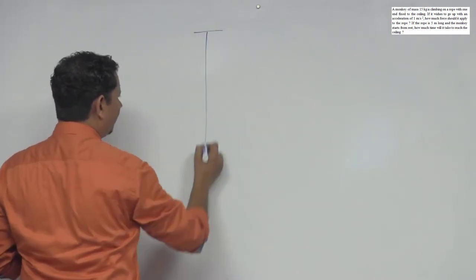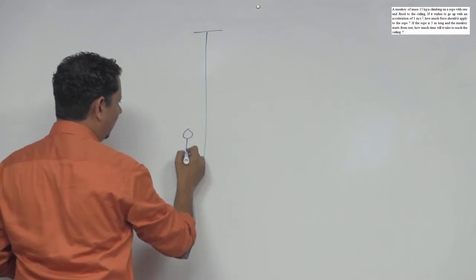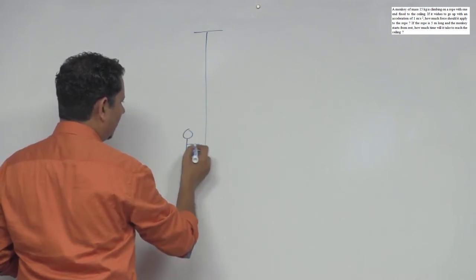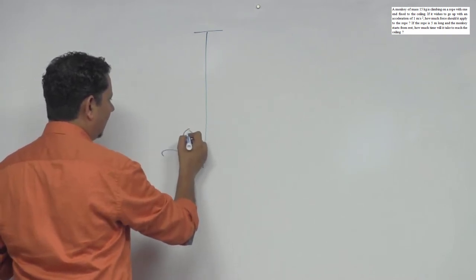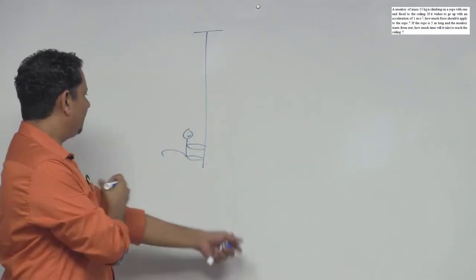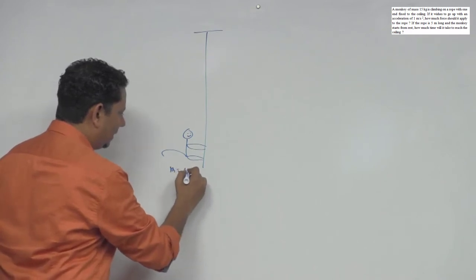Let's say you have a rope, and here you have a monkey climbing upwards. Let me draw a smiling monkey here. Its mass is given as m equals 15 kg.